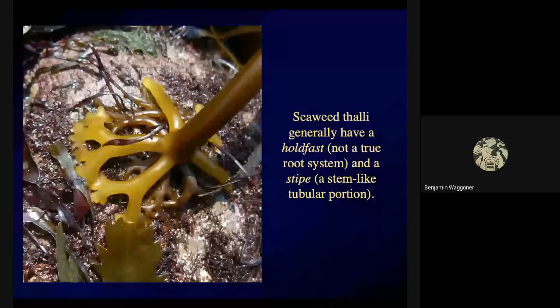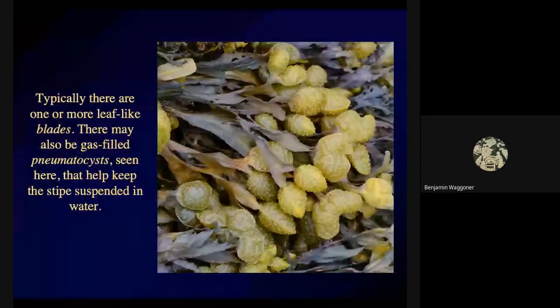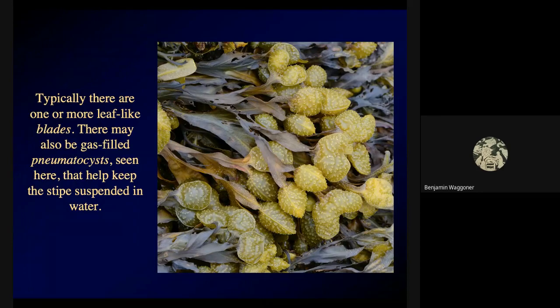The stipe will often branch into one or more blades. The blades may bear pneumatocysts — gas-filled bladders that help the seaweed stay upright in water. All those spiky things right there are just gas bladders.